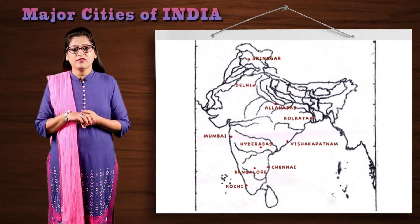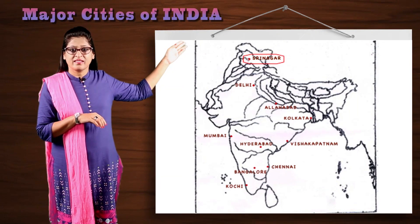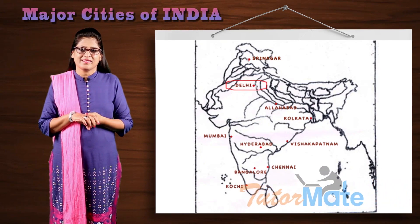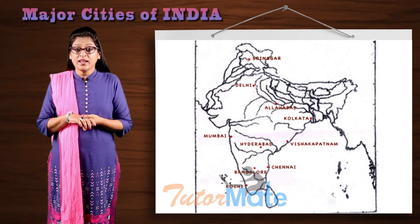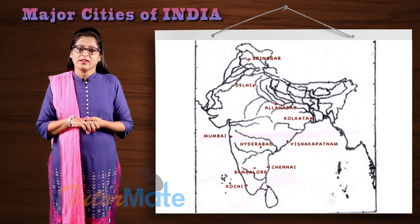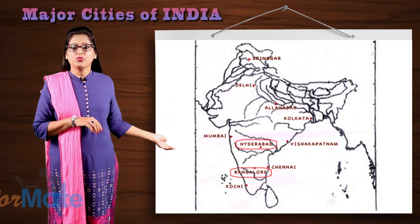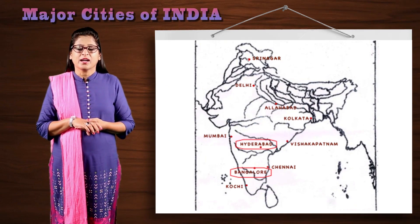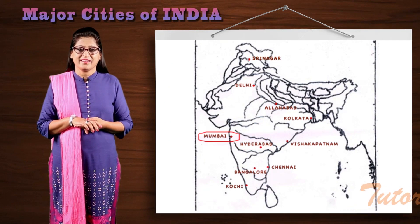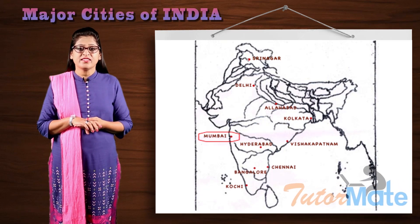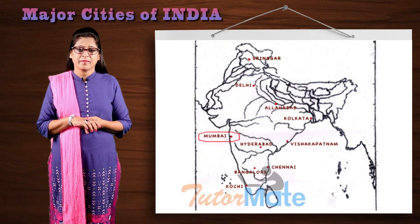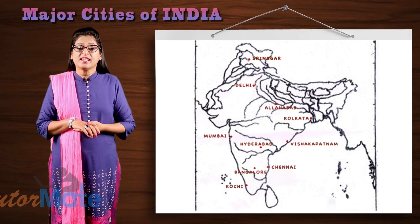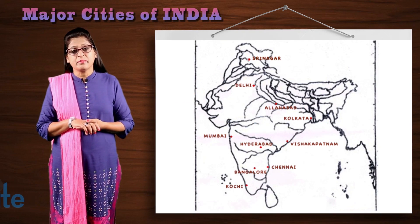For example, capital of Jammu and Kashmir — that is Srinagar. Capital of India — that is New Delhi. Or an interesting question like the IT city of India — that is Hyderabad and Bengaluru, either of them is correct. Commercial city of India or financial city of India — that is Mumbai. A port city on the eastern coast — that is Visakhapatnam or Chennai. So these are the interesting questions on the major cities of India.